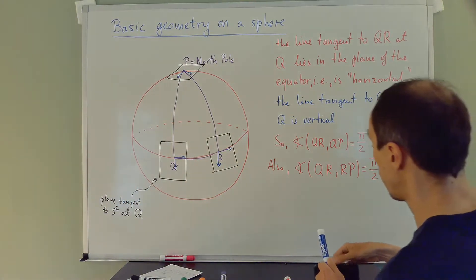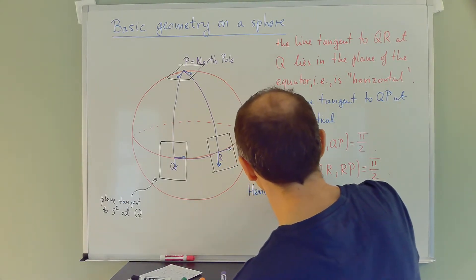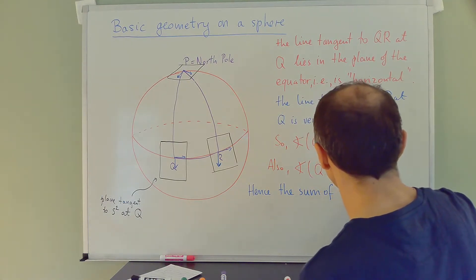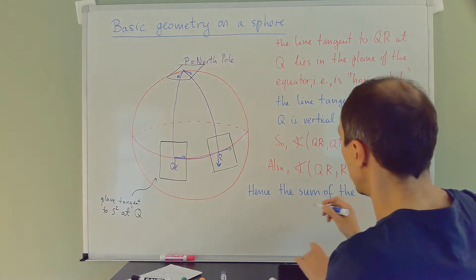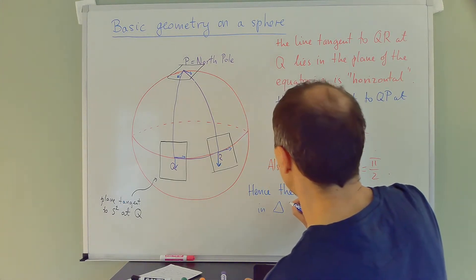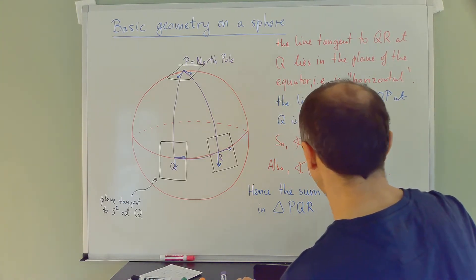Hence, the sum of the angles in the triangle PQR is strictly greater than π.